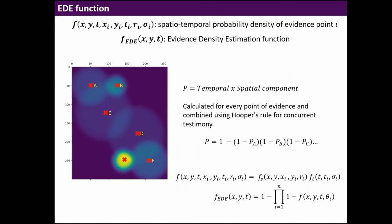The resulting spatial temporal probability density is a result of multiplying the spatial and the temporal component. Then the probabilities from standing from the single points of evidence is combined using Hopper's rule for concurrent testimony. This also eliminates the bias.